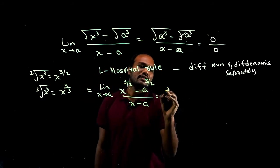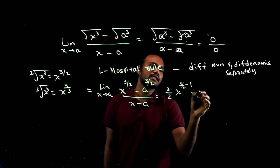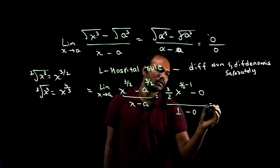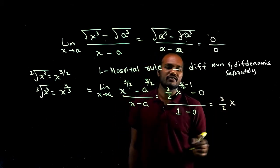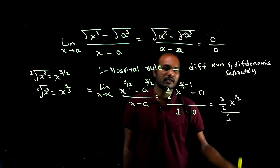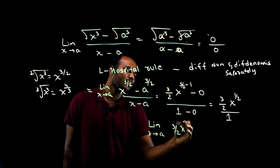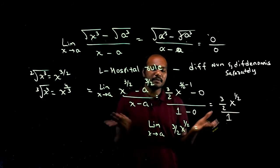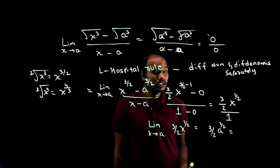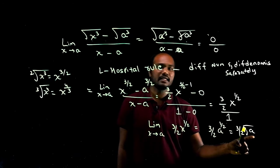The differentiation of x to the 3/2 is 3/2 times x to the power 3/2 minus 1, which is 3/2 times x to the 1/2. The differentiation of a to the 3/2 is 0 because a is a constant. The denominator x minus a differentiates to 1. So we have limit x tends to a of 3/2 times x to the 1/2, divided by 1. We substitute the limit: x = a, so we get 3/2 times a to the 1/2, which is 3/2 times root a. That is the answer.